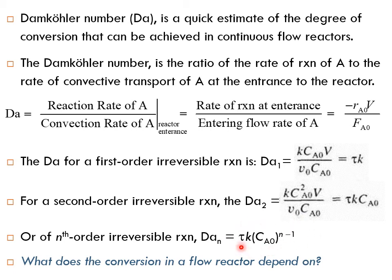which represents the residence time, reflected in the volume of the reactor and the entering volumetric flow rate. It's also a function of k, representing how fast the reaction takes place, and a function of CA0 as well, which affects two things: CA0 affects the rate of reaction and also affects the entering flow rate. So by looking at the Damköhler number, you can know that the conversion in a flow reactor depends on these three things.